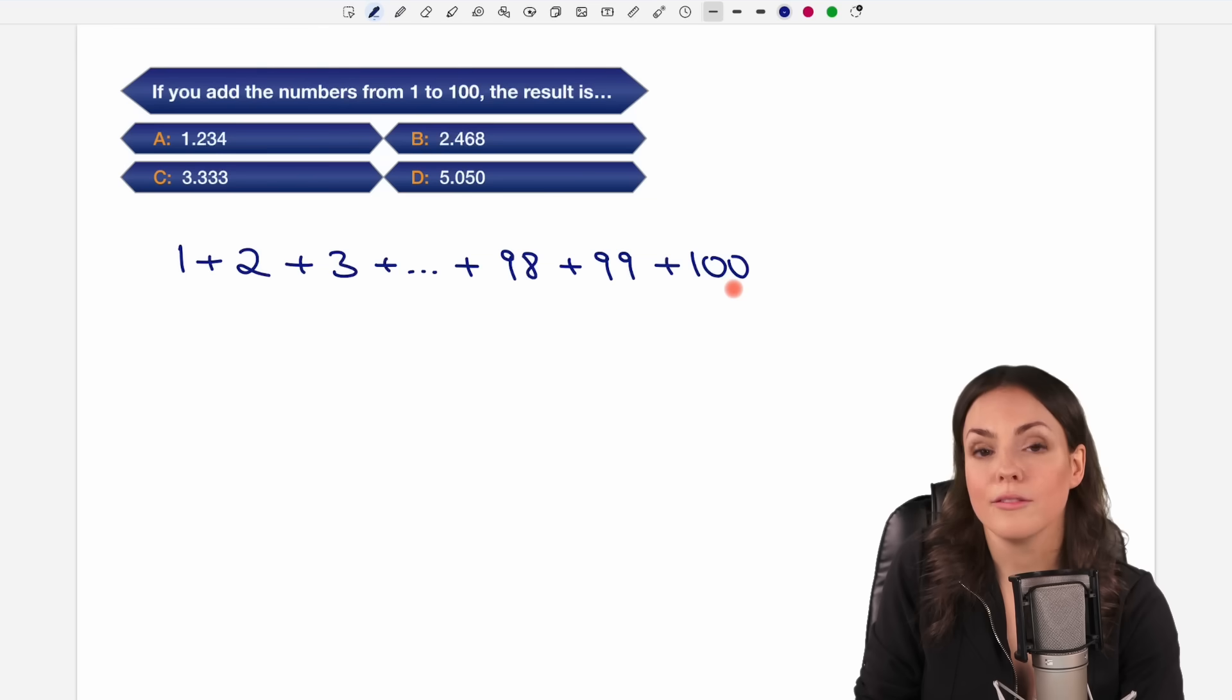If you had enough time to add these numbers you could just start at the beginning and do 1 plus 2 equals 3, plus 3 equals 6 and so on. But of course when you're sitting in this seat on this TV show you don't have this time. So there has to be a faster way.